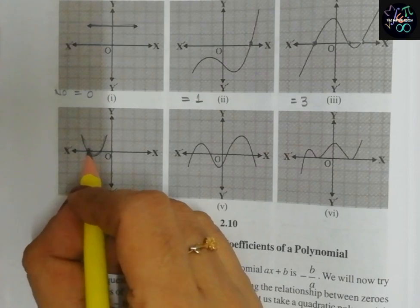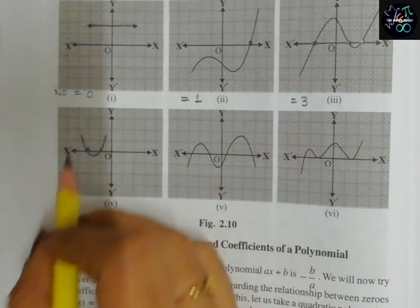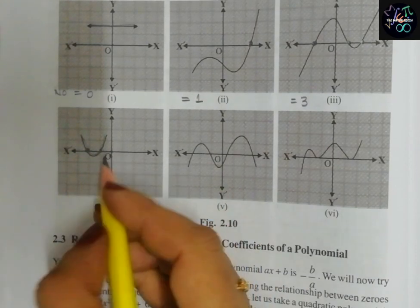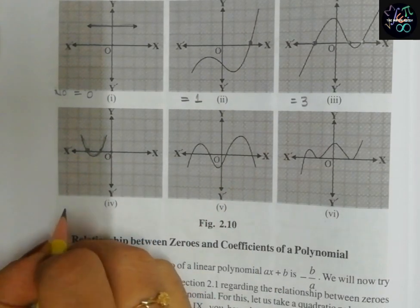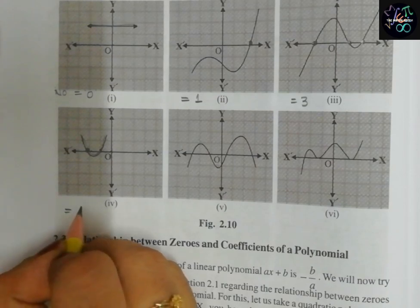In the fourth graph, the graph intersects the x-axis at two points. So the number of zeros is equal to two.